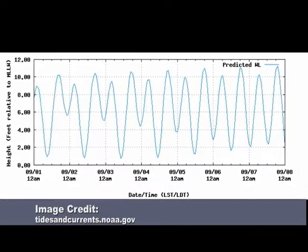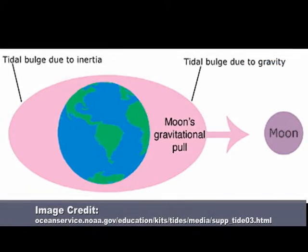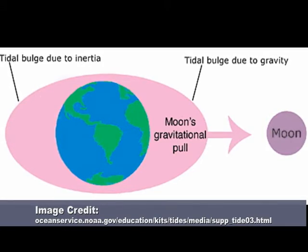The water movements in Puget Sound are driven mostly by the tides. Ocean tides are created by the gravitational effects of the Sun and the Moon on the Earth.